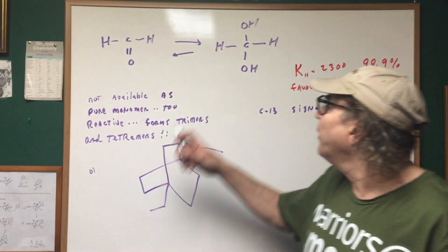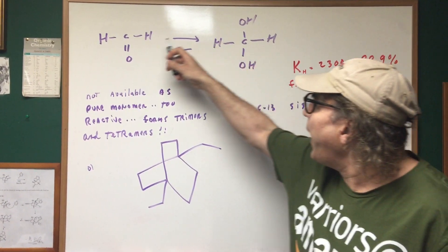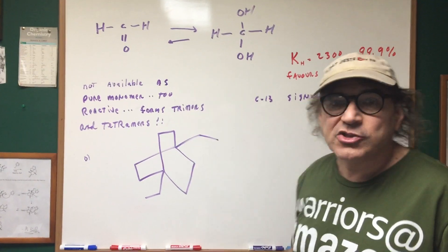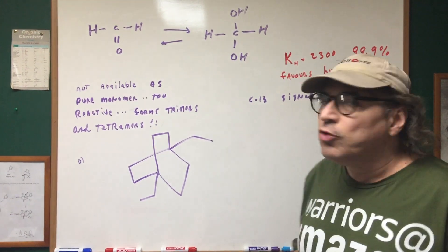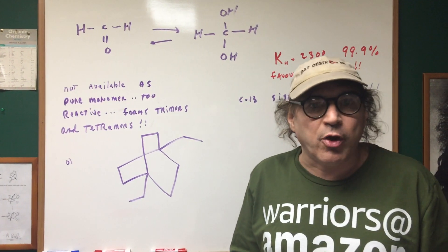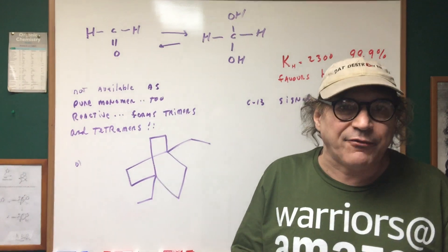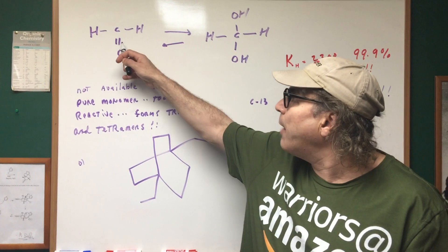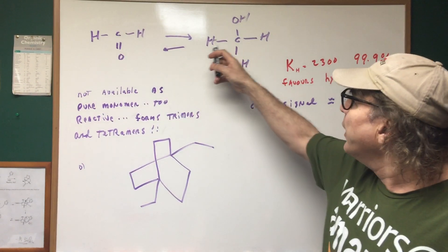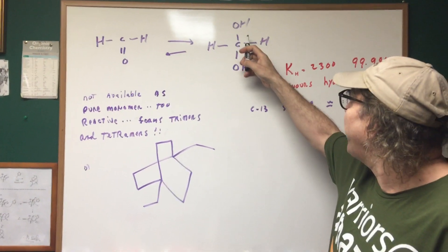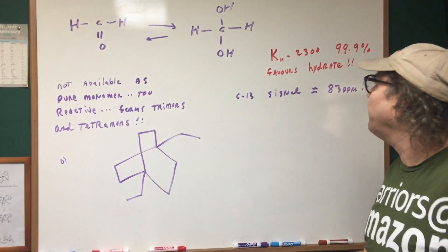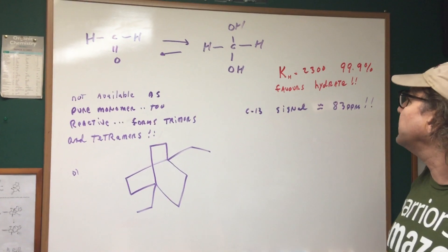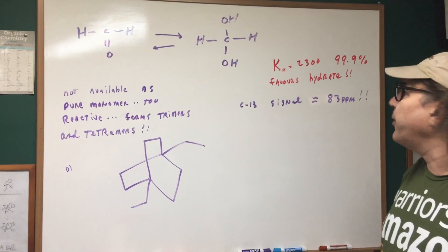So what we have to do is we put it in solution. So when we put it in solution it exists as an equilibrium with its hydrate and normally the carbonyl group is favored. If I gave you an aldehyde and we put it in solution you would always have the carbonyl group favored but not in this case. In this case the hydrate is favored and I gave you an idea of the equilibrium constant that would be 2.3 to the third.